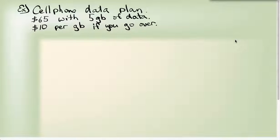If I look at a cell phone data plan, here's another example. Starting with a sixty-five dollar data plan with five gigabytes of data and ten dollars per gigabyte if you go over. Let's figure out our intervals first. Let's go with cost with respect to gigabytes, so cost with respect to G.